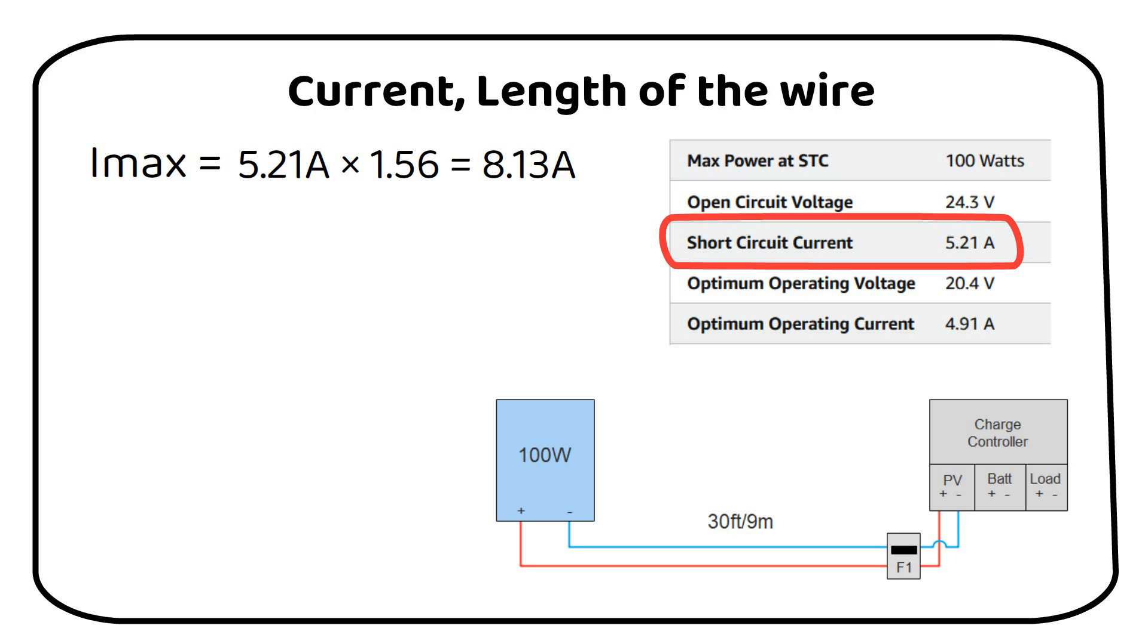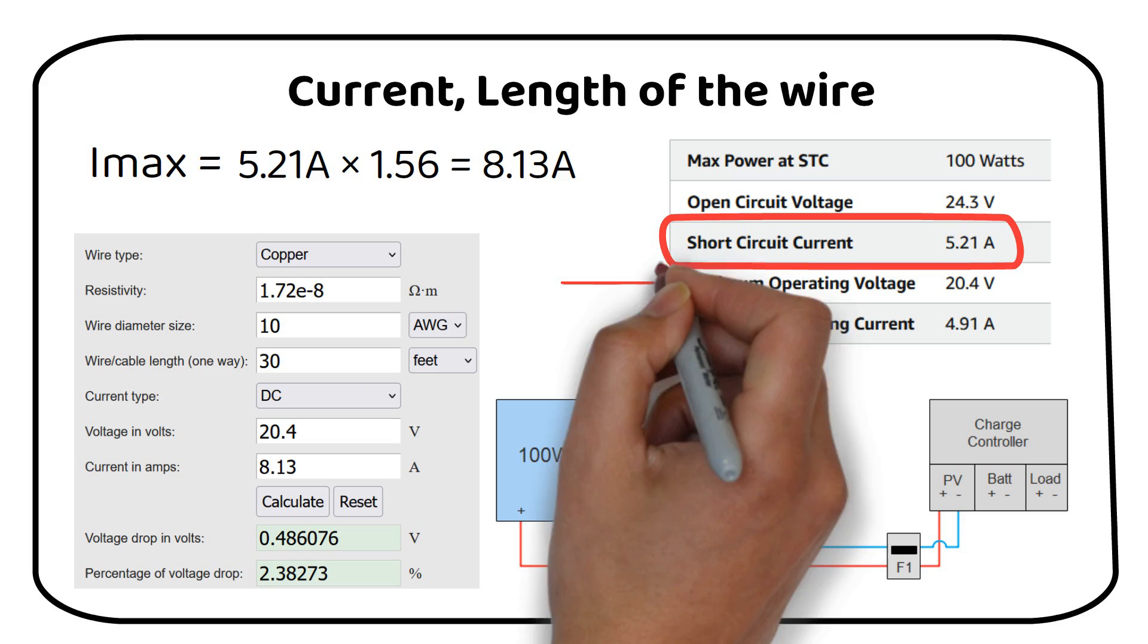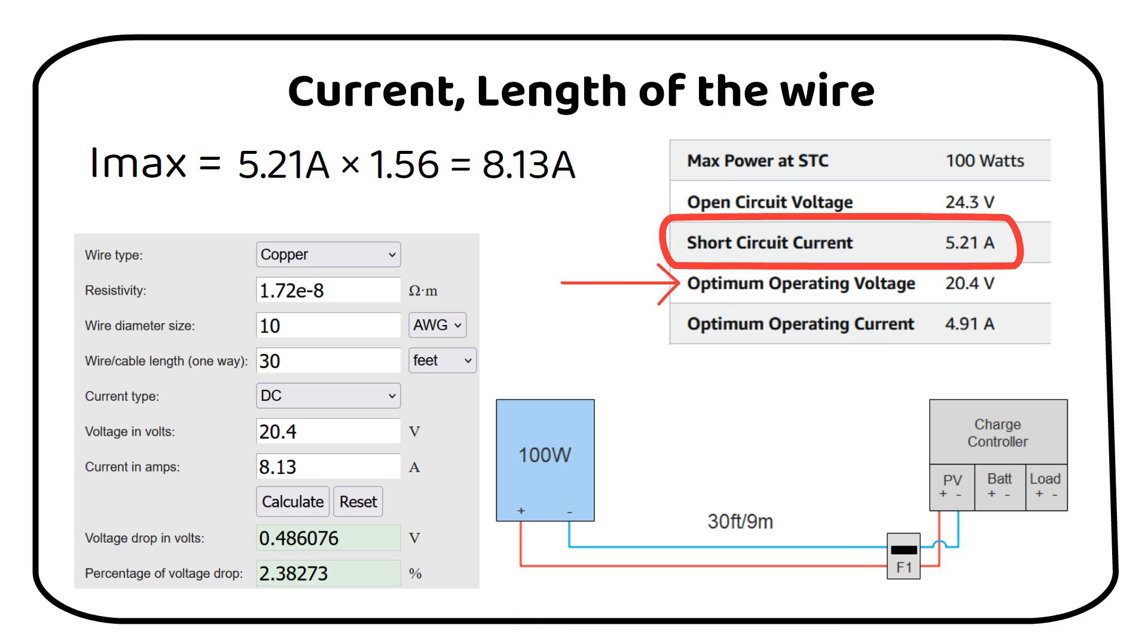The second step is to use a voltage drop calculator. Remember, the length to the charge controller is 30 feet or 9 meters. Let's use an online voltage drop calculator. I will post the link in the description. We need to fill in all the details first. Let's start with a 10 gauge wire and use the given length of 30 feet. Then select DC and use the VMP of the solar panel with the calculated maximum current.